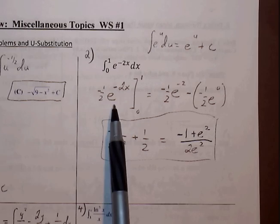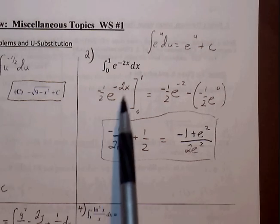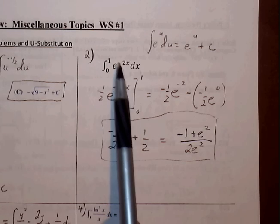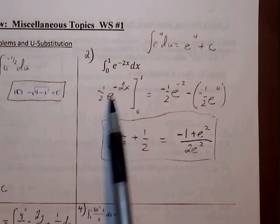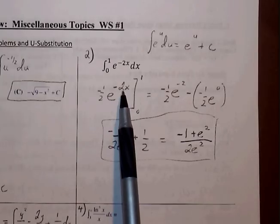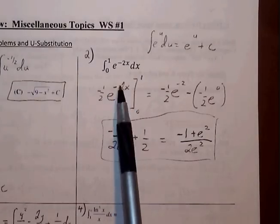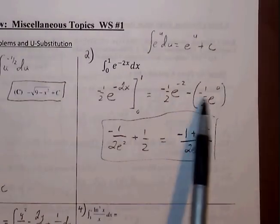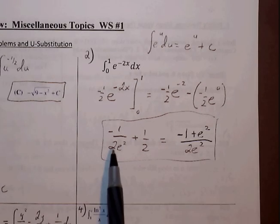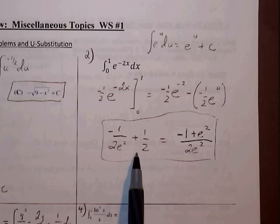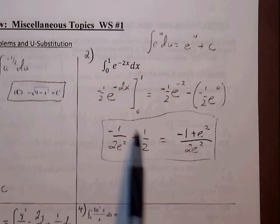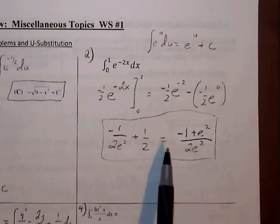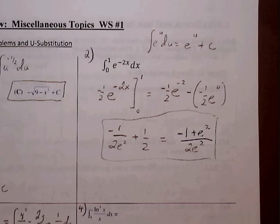If you want to go through u-substitution to find the indefinite integral, that's fine, but recognizing the reciprocal saves time on the exam. Plugging in the upper and lower bounds: the upper bound gives negative one-half e to the negative 2, and the lower bound gives negative one-half e to the zero. There's another negative that cancels, leaving us with negative 1 over 2e squared plus one-half. If the multiple choice requires a common denominator, we adjust to negative 1 plus e squared over 2e squared.